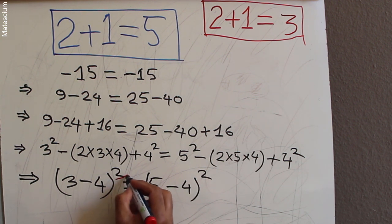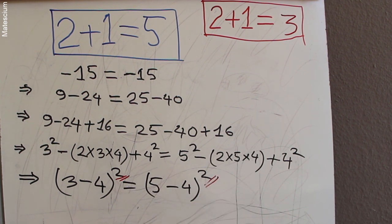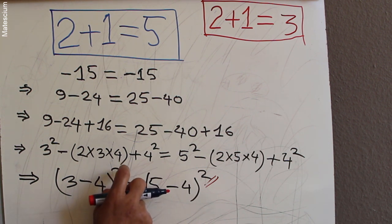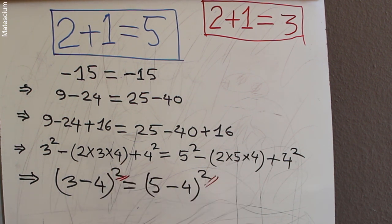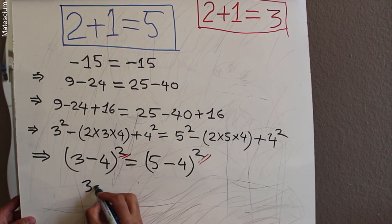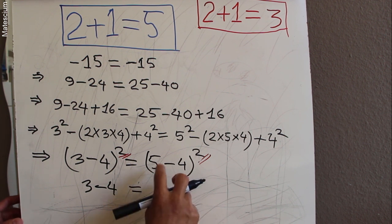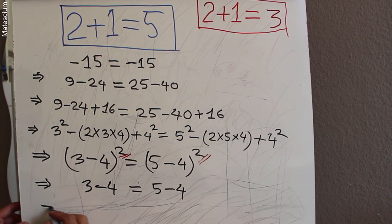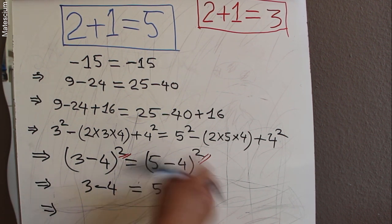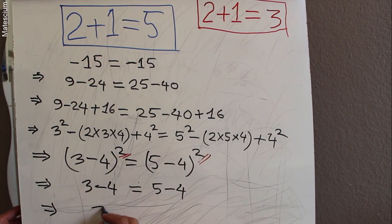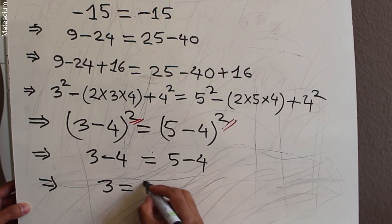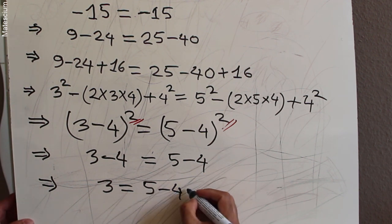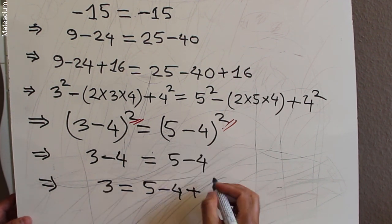The interesting part: on the left-hand side we have a squared term, and on the right-hand side we also have a squared term with the same positive sign. So I eliminate the squares from both sides. What remains on the left is 3 minus 4, and on the right is 5 minus 4. Then I move the minus 4 from the left side to the right, making it plus 4.